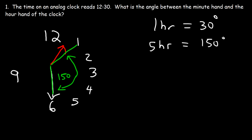So now we need to find the angle from this point to this point. We know from 12 to 1 it represents 30 degrees. So the red line is right between 12 and 1, because we're at 12:30 — we're halfway between 12 and 1. So if we're halfway, we need to multiply 30 by half. Therefore, the angle on the inside is 15 degrees.